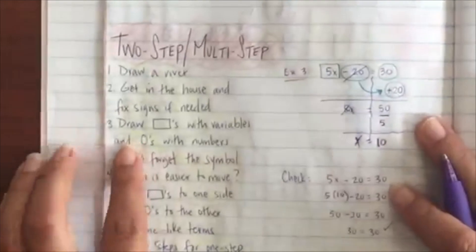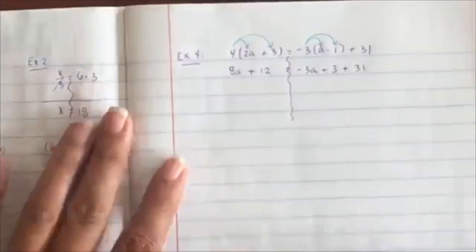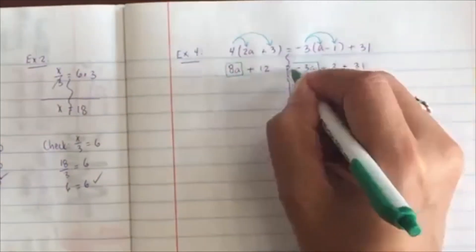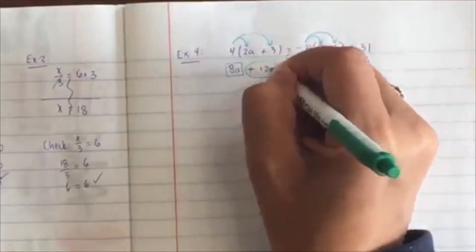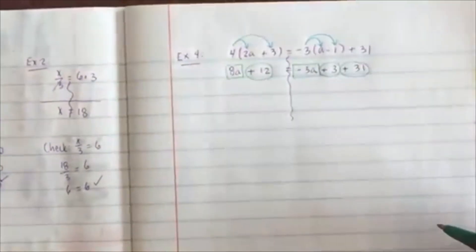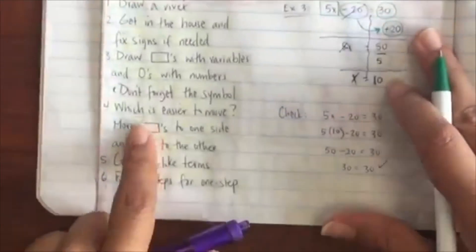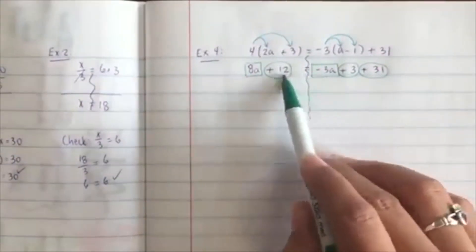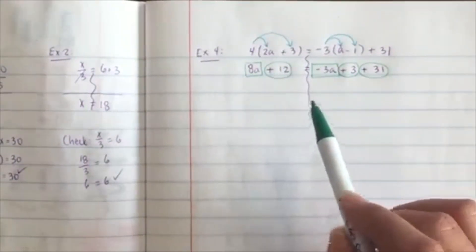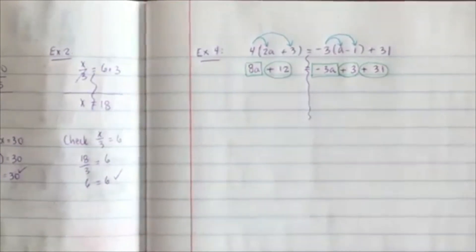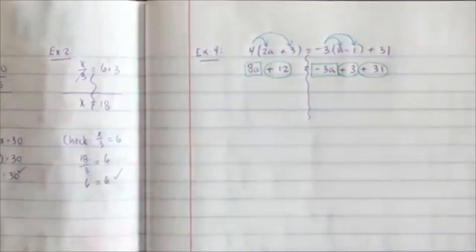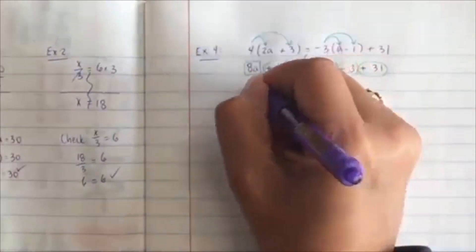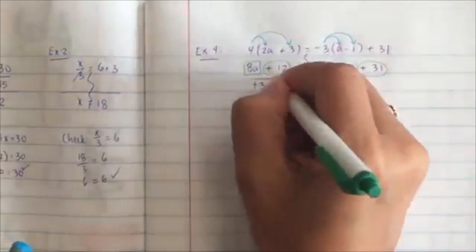Let's do boxes and circles. Boxes with variables, circles with numbers. So we're going to box 8a — do not forget the symbol. We're going to box negative 3a — do not forget the symbol. We're going to circle positive 12, positive 3, and positive 31. Now let's move things — whatever is easiest. It's probably easier to move the boxes to the left and the circles to the right. So we're going to move negative 3a to the other side — it crosses the river and changes from negative 3a to positive 3a.